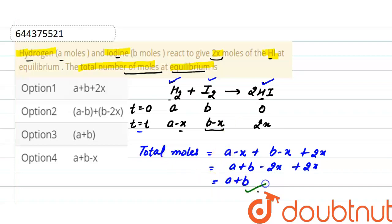So, total moles at equilibrium is a plus b, and the correct option here is option 3, in which the total moles at equilibrium is a plus b.